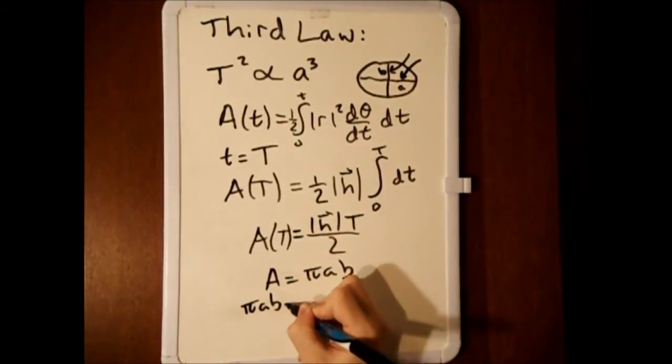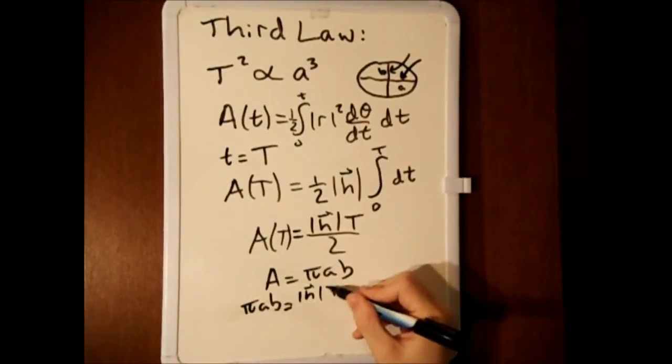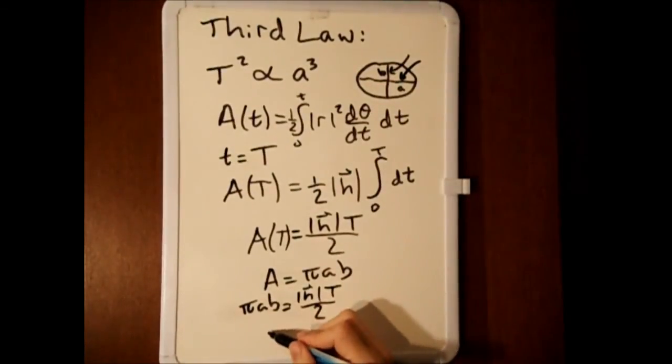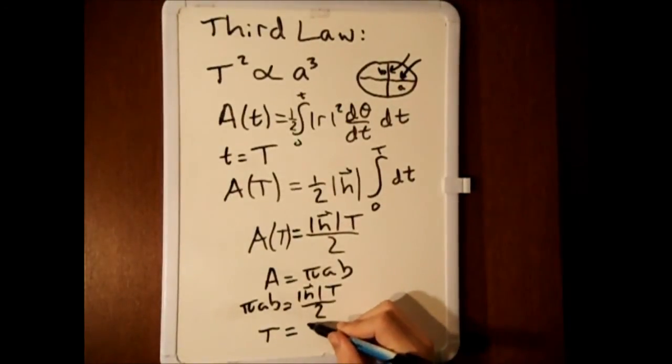Pi ab equals the magnitude of h times T over 2. Rearranging to get an expression for T, we get T equals 2 pi ab divided by the magnitude of h.